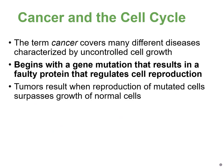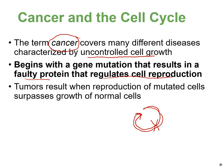The term cancer covers many types of diseases, but they all share the characteristic of uncontrolled cell growth — the cell is dividing when it shouldn't be. In all cancers, it starts with a gene mutation that results in a faulty protein that normally regulates cell reproduction, causing the cell to divide uncontrollably.